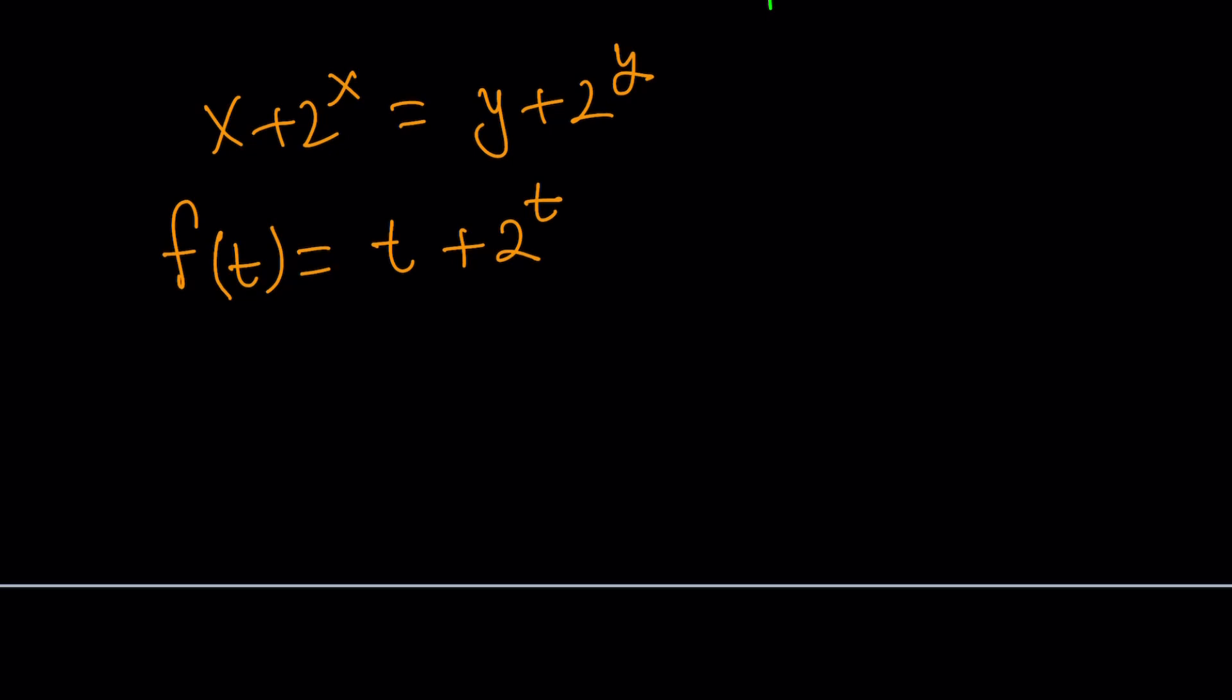Now what can I do with this? This basically tells me, if this is my function, x + 2^x is f(t) evaluated at t = x. So if t = x, then f(x) = x + 2^x. And if t = y, then we get f(y) = y + 2^y. I know this is kind of unusual for people used to seeing y = f(x) all the time, but that's a general way to introduce functions. We can use any variable.